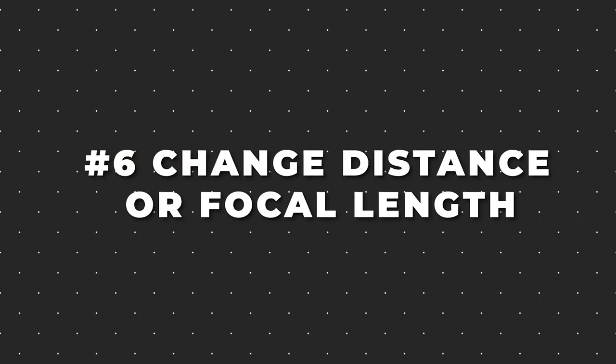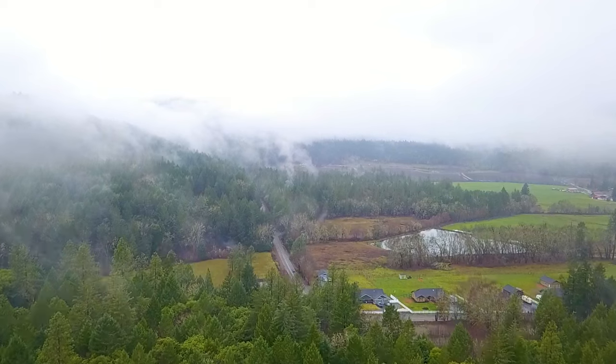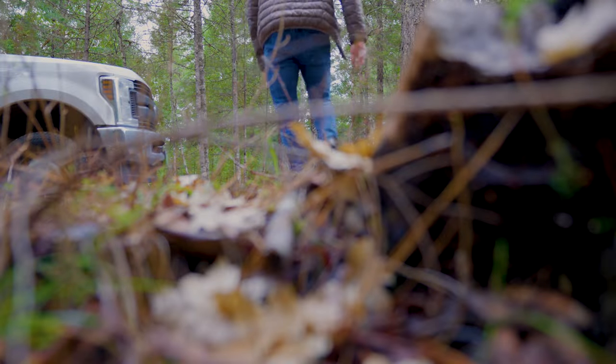Number six is to change the distance to the subject or the focal length. Most people are about the same distance from everything at the same angle. You want to constantly change that to keep it interesting — you see that constantly in movies. In our video we're creating, we're starting with a wide establishing shot with a drone, then going to a medium shot of the forest revealed from behind a tree, then getting close to the ground. We can change distance by walking closer or farther, or change focal length by zooming or swapping lenses.